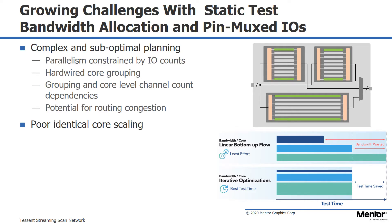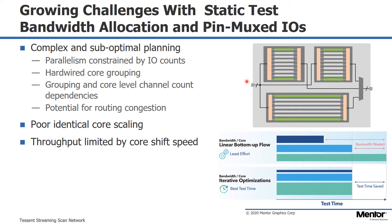Furthermore, the pin-mux approach is not very effective when dealing with large numbers of identical cores. You can broadcast scan inputs to multiple cores, but typically have to observe the scan outputs for all of the cores. There are also challenges associated with multiple different pipeline stages and different numbers of pipelines for different cores. The throughput is also determined by the core shift speed — so even though your tester and IOs can operate at a higher frequency, your shift speed is limited by what the cores can handle.